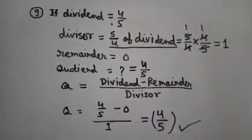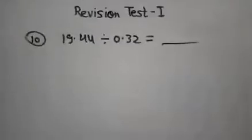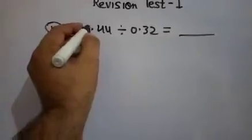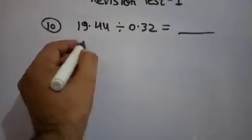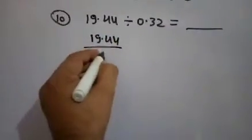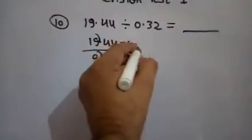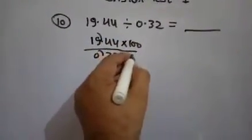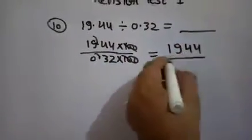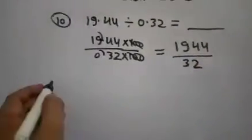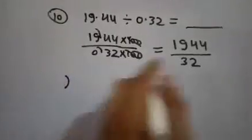Question number 10: when 19.44 is divided by 0.32, what will you get? For 19.44 ÷ 0.32, multiply both by 100 to remove the decimals — the hundreds cancel and the answer becomes 1944 ÷ 32. First simplify: divide 1944 by 32.